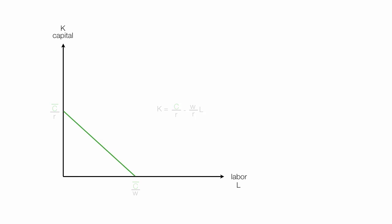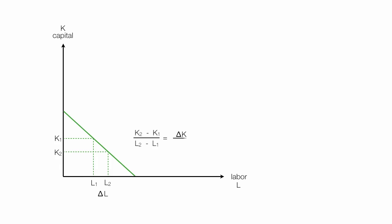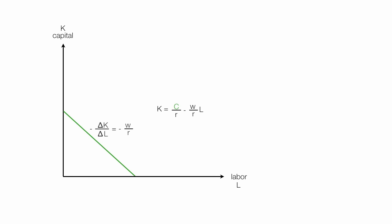I can also determine the slope another way. If I use K1 capital I will use L1 labor, and at another point K2 capital and L2 labor. So I have K2 minus K1 — that's the change in capital — divided by L2 minus L1, or the change in labor. This is rise over run, and the slope of the line is negative change in capital divided by change in labor. This is equal to negative W divided by R — so those are equivalent, both being the slope of that line. Keep this in mind, I'll come back to this.